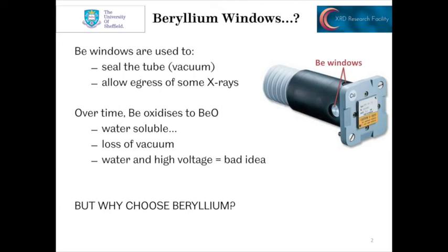Over time, beryllium will oxidize to beryllium oxide. We tend to get these white crystals forming upon the windows. These are water-soluble and water permeable, so water can get into the X-ray tube, causing a loss of vacuum — and water and high voltages tend to be a bad idea. So why do we choose beryllium? It's an expensive metal, it's increasingly hard to get hold of, so why do X-ray tubes have beryllium?